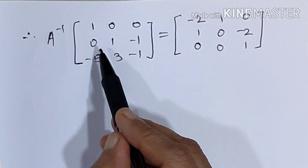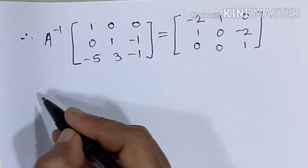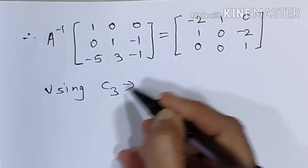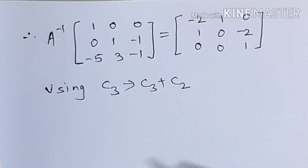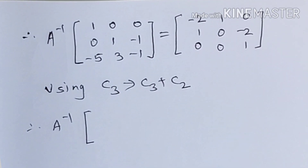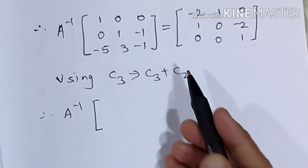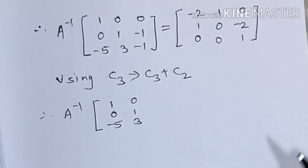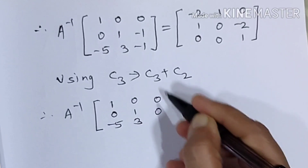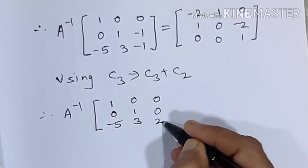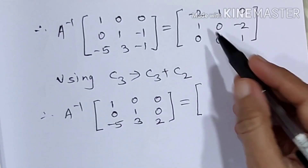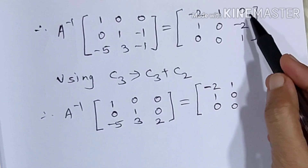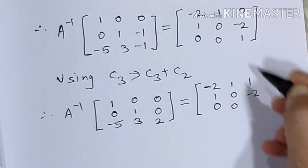Now we have first row 1 0 0, second row 0 1. We want 0 in the last position of the second row. The next operation is C3 changes to C3 plus C2. The first two columns remain as is: 1 0 minus 5 and 0 1 3. The third column changes: 0 here, 0 here, and minus 1 plus 3 = 2 here. On the right-hand side, C3 plus C2 gives: 1 here, minus 2 plus 0 = minus 2 here, and 1 plus 0 = 1 here.